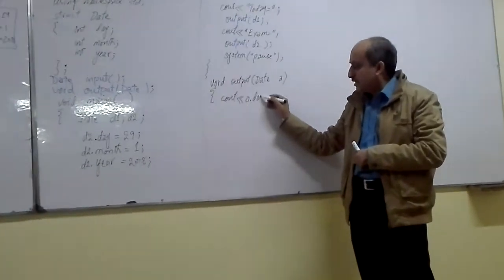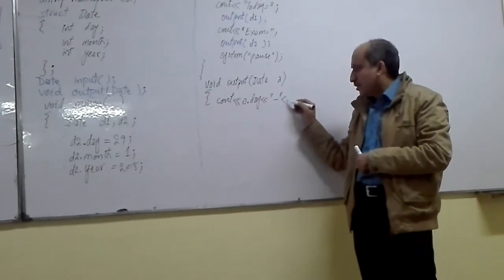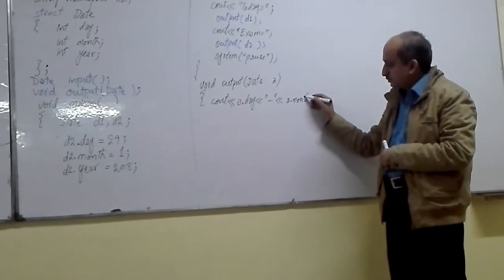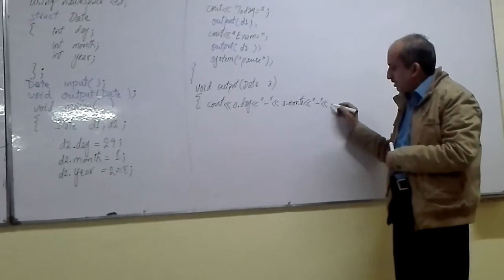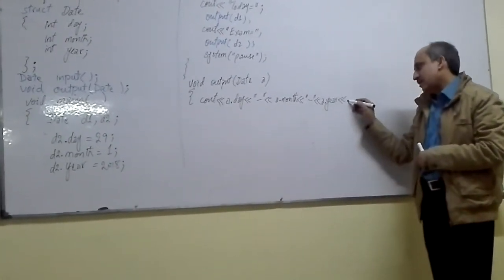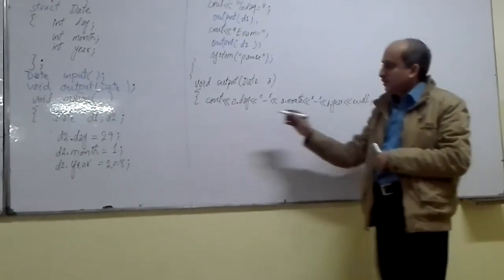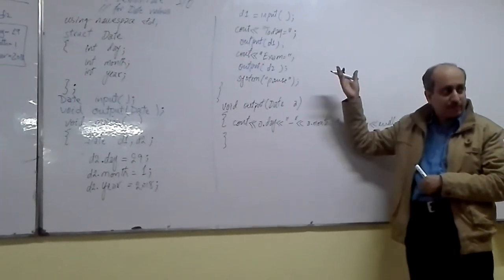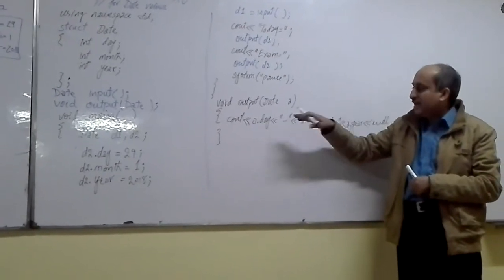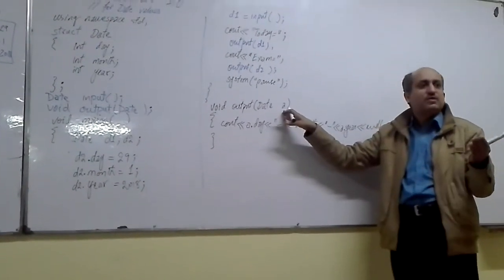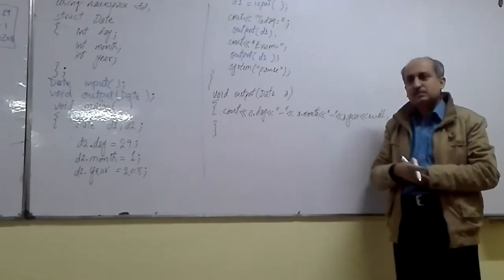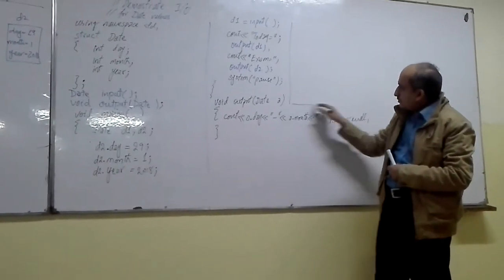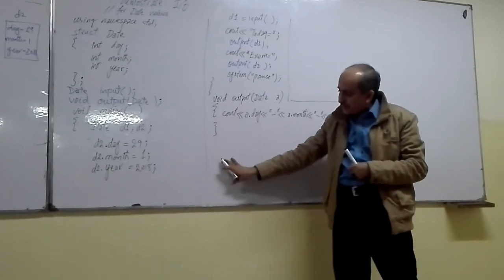Using 'a.day', then 'a.month', and 'a.year' in the cout statement, and adding a newline at the end. The output function is complete — it does not need to return anything. The same code that was previously written in the main program is used here, with the slight modification that instead of D1 we use the local parameter variable 'a'. After the output function, we can write the input function.